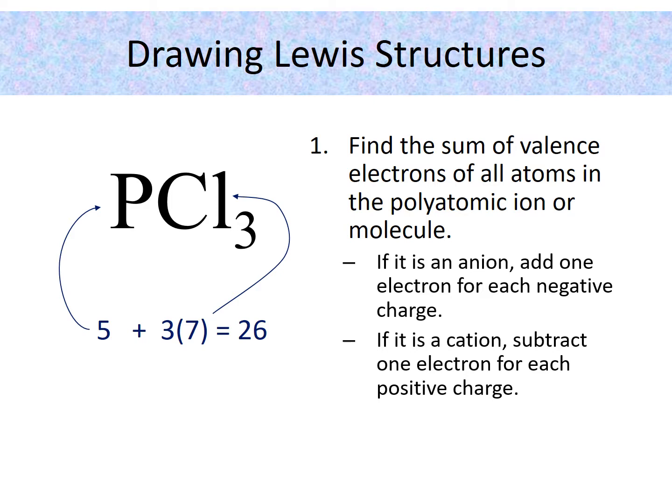So now that you have the total number of valence electrons, now you know how many electrons you need to use in your structure. You can't have more than that, and you can't have less than that. We can't create or destroy matter, right? So these are the number of electrons we need to make sure that we keep track of.